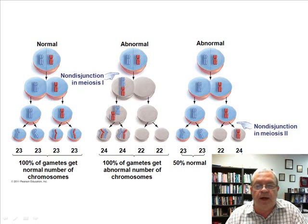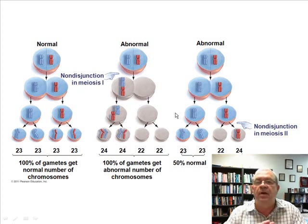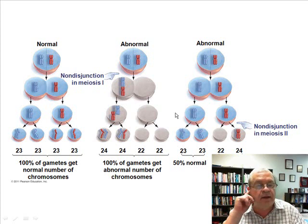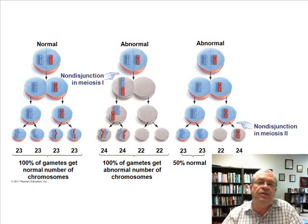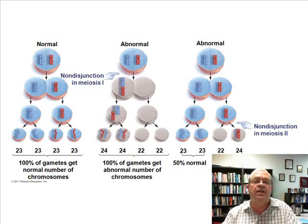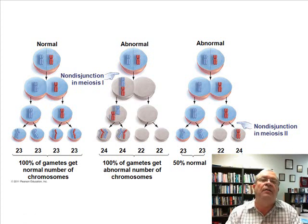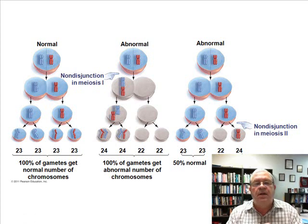Non-disjunction could occur in meiosis I or meiosis II. What does non-disjunction mean? It means failure to separate — in this case, the failure of chromosomes or chromatids to separate properly during meiosis.